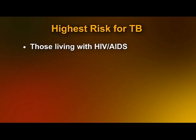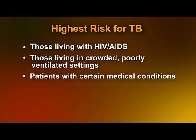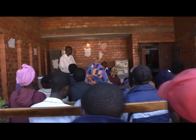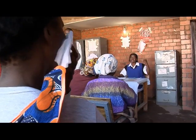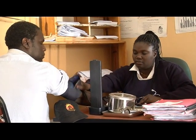At the highest risk of getting TB are those living with HIV-AIDS, people living in crowded poorly ventilated settings such as correctional facilities, military barracks or refugee camps, patients with medical conditions such as diabetes, cancer or renal failure, those taking immunosuppressive medications like steroids or chemotherapy, and children under the age of five. Who is most likely to interact with all of these people? You are. Because of your job, you are very likely to come into contact with many people who have TB, and that puts you at high risk of getting TB too.